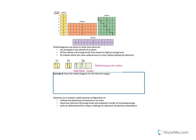Orbital diagrams use boxes to show how electrons are first arranged in the orbitals of an atom, how they fill the orbitals and the energy levels from the lowest level to the highest energy level, and fill orbitals within the same sublevel one at a time before pairing the electrons.